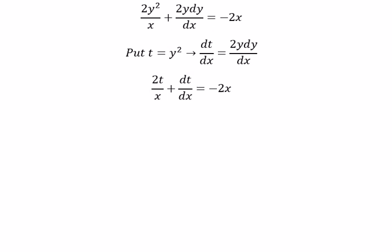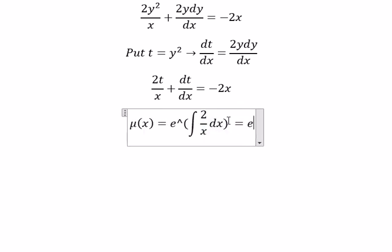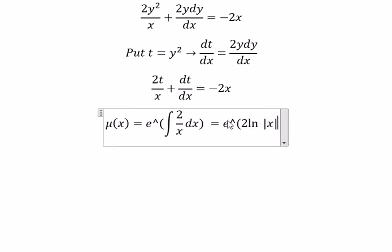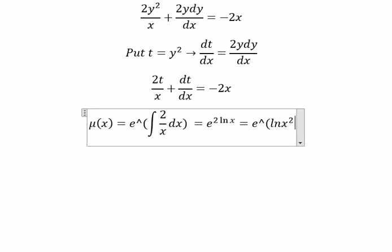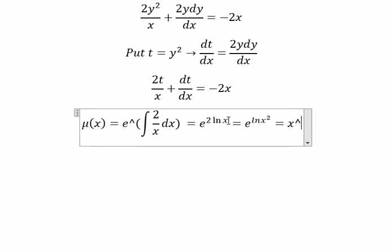Now we need to find the integrating factor μ(x), which is e to the power of the integral. We have 2/x, so in this situation we get e^(2 ln x), which equals e^(ln x²), giving us x².